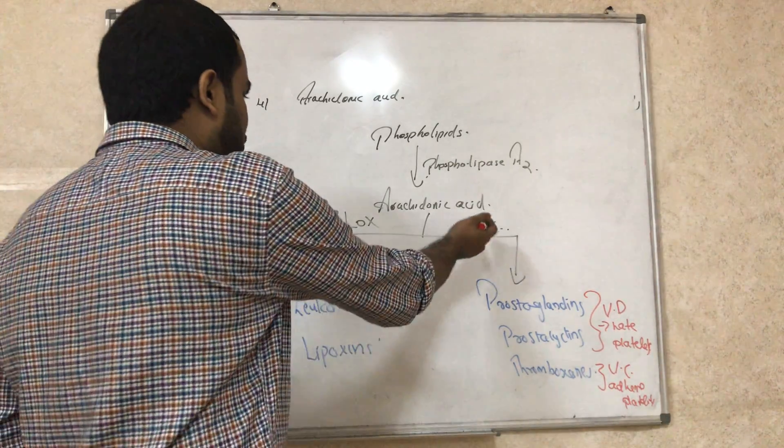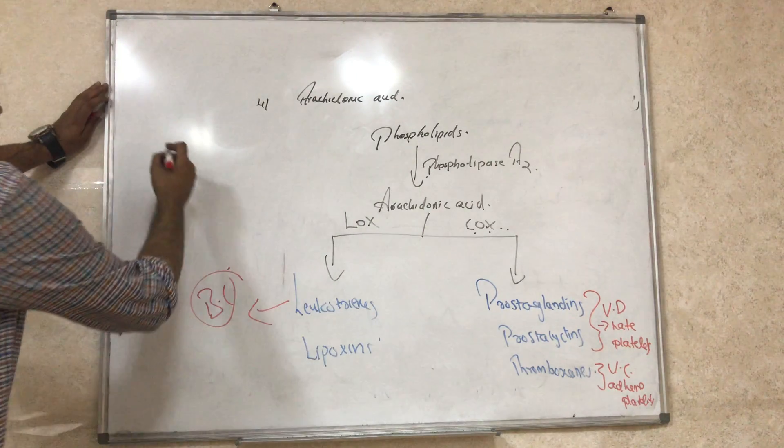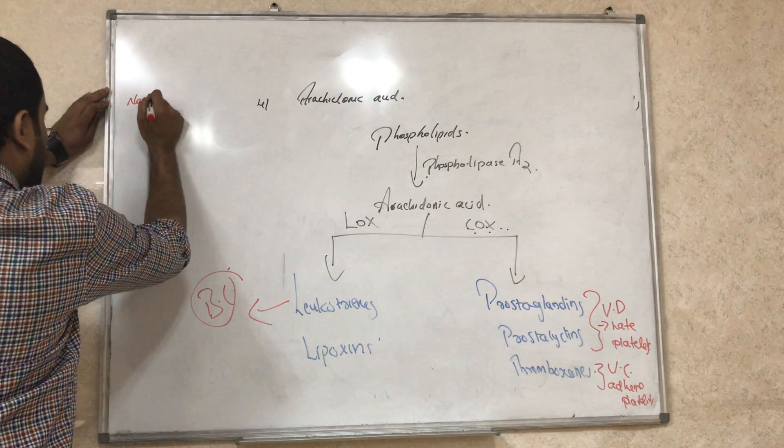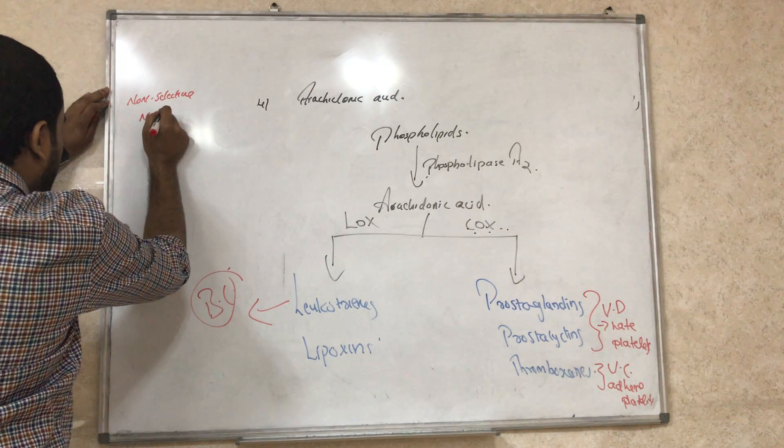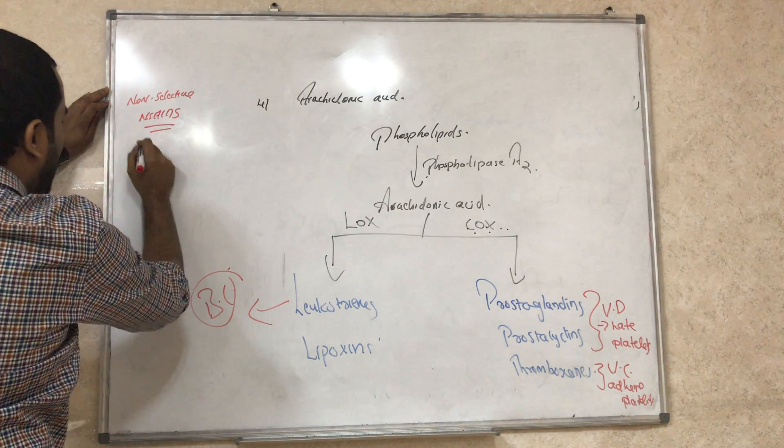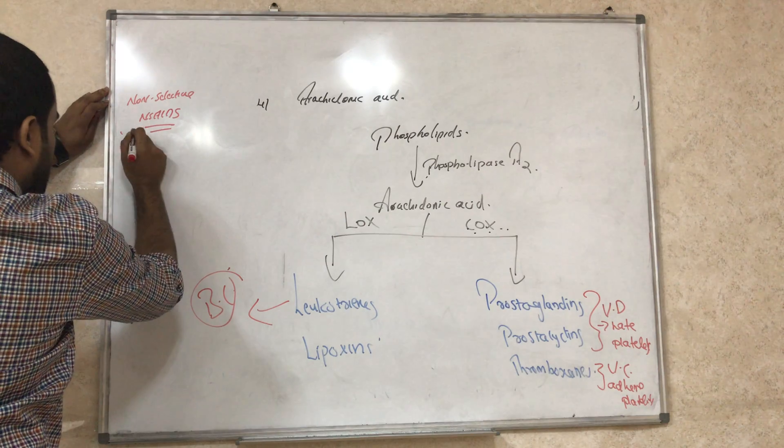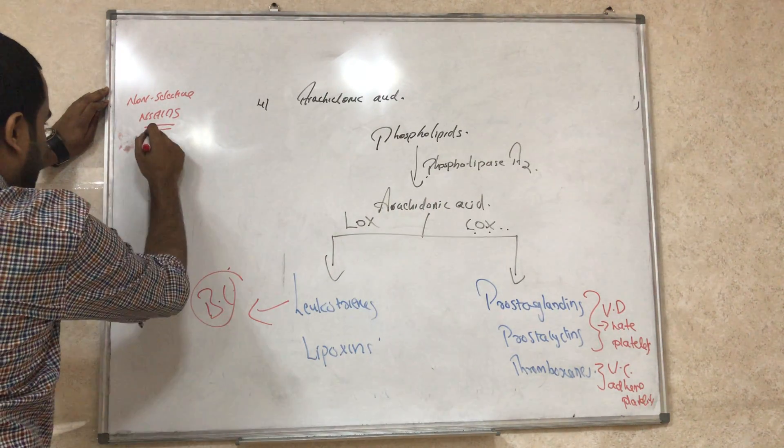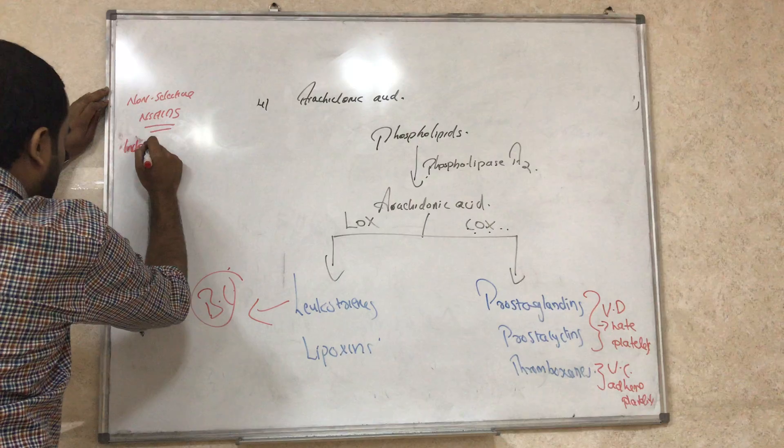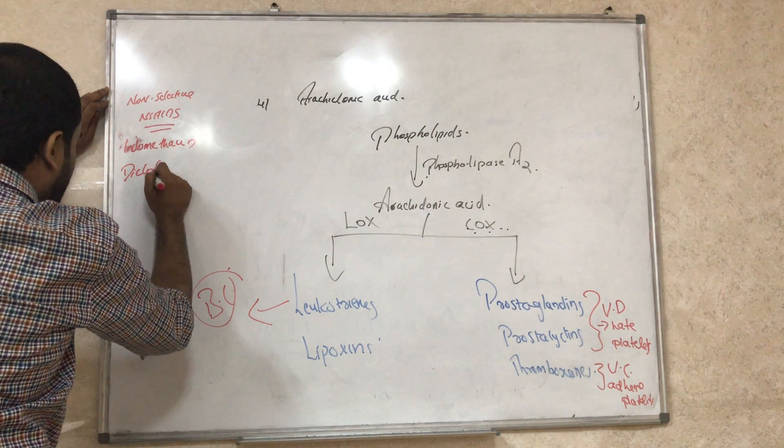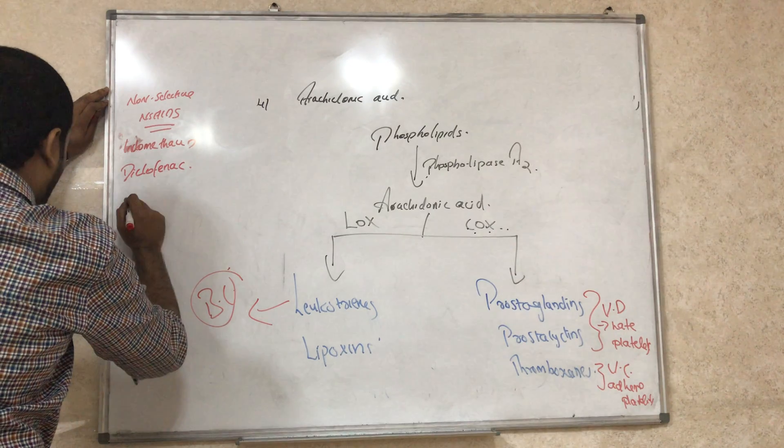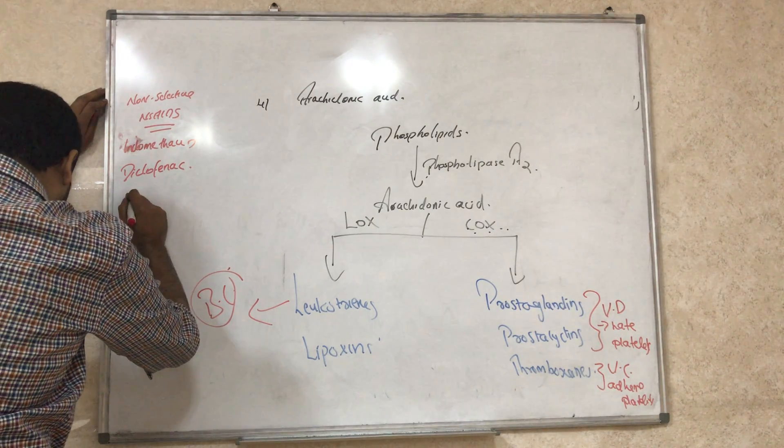Now if we are talking about pharmacology, we have the non-selective NSAIDs, non-steroidal anti-inflammatory drugs. They are blocking our COX, the cyclooxygenase pathway. The drugs include indomethacin, diclofenac, aceclofenac, or naproxen.